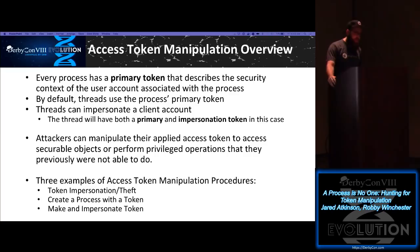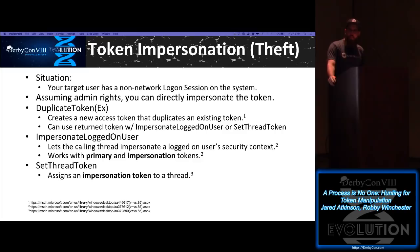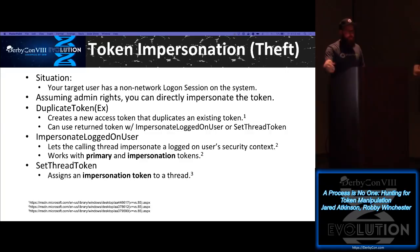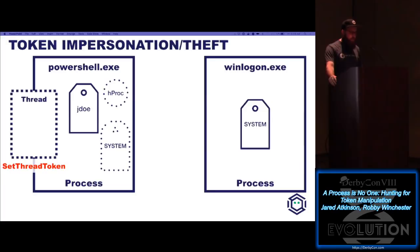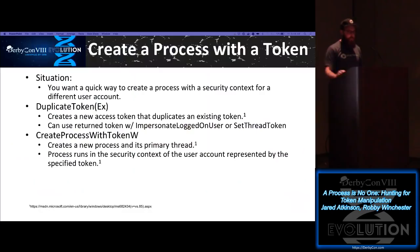Token theft is a kind of 'get system' attack where you directly steal a token from a running process. Your target user has a non-network logon session on the system — this could be a process running as system like winlogon, or maybe a domain admin who has logged into a system and you want to steal their token. You call DuplicateTokenEx — open the process you're interested in, duplicate the token, get a secondary token — and then you can apply that token to your thread using ImpersonateLoggedOnUser or SetThreadToken. So with PowerShell, you call OpenProcess to get a handle to winlogon, call DuplicateToken to get a duplicate system token, and apply it to your specific thread. Now any code running in that thread operates as the system user.